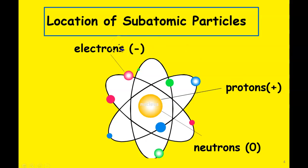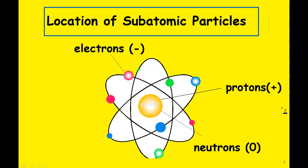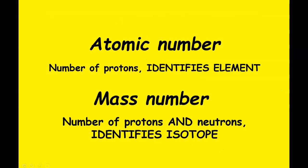You also need to know where each particle is located in the atom. Electrons are located outside of the nucleus — they fly around outside. Protons are inside the nucleus, where all the mass is, and neutrons are also inside the nucleus.